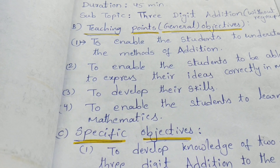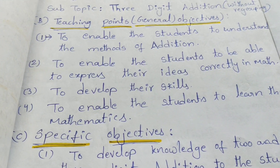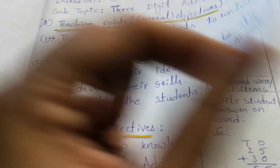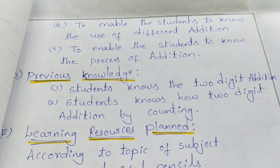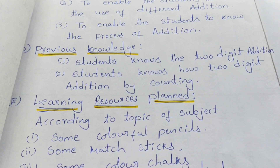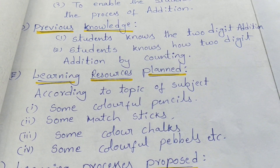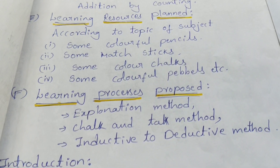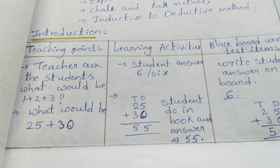These are the continuous topic lesson plans. Specific objectives, previous knowledge, learning resources, planning process, and proposed introduction are all mentioned here.